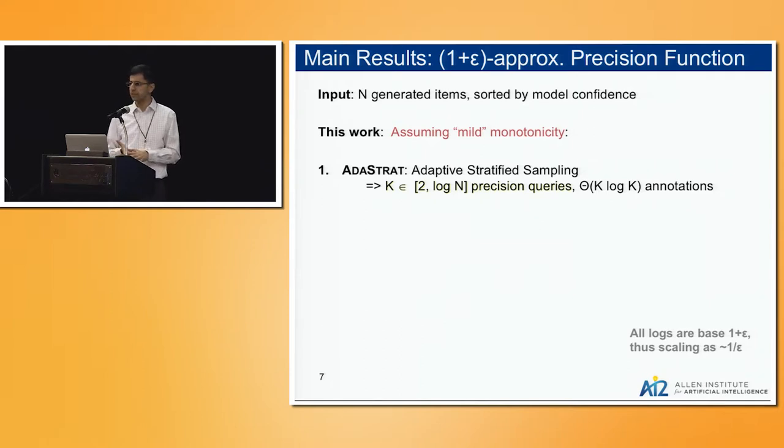With that we can do turns out much better, at least on real life data and even asymptotically. Now we have Adaptive Stratified Sampling, short AdaStrat, that queries precision at k points, where k ranges from 2 to log n. I'll show you examples where it's only about a couple dozen, like 20 or so points, when n is something like 3 million.